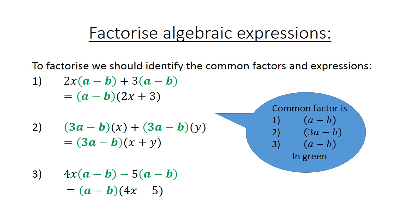The common factor if you look at number 1 is (A minus B). Number 2: (3A minus B). And the last one: (A minus B). They're all highlighted in green.